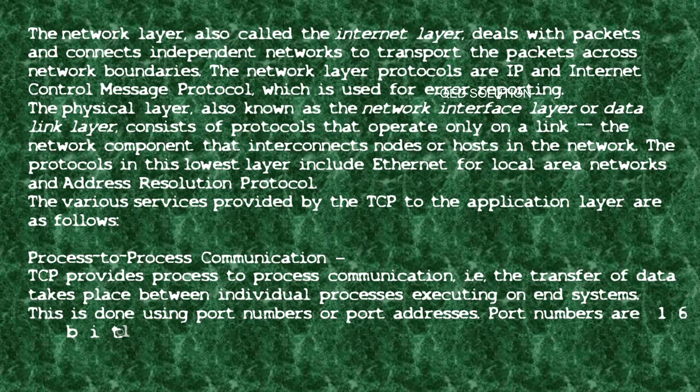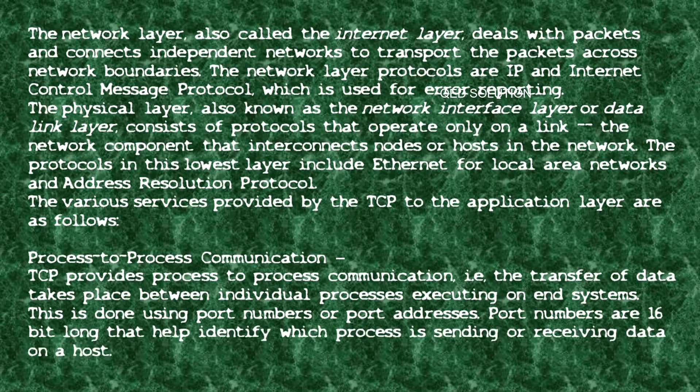The network layer, also called the internet layer, deals with packets and connects independent networks to transport packets across network boundaries. Its protocols are IP and ICMP, which is used for error reporting. The physical layer, also known as the network interface layer or data link layer, consists of protocols that operate only on a link — the network component that interconnects nodes or hosts. Protocols at this lowest layer include Ethernet and ARP.